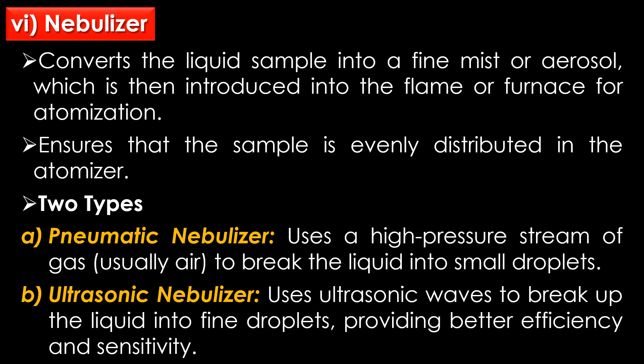The sixth part is the nebulizer, which converts the liquid sample into a fine mist or aerosol that is then introduced into the flame or furnace for atomization. The nebulizer ensures that the sample is evenly distributed in the atomizer. There are two types: the pneumatic nebulizer, which is most commonly used and uses a high-pressure stream of gas to break the liquid into small droplets, and the ultrasonic nebulizer, which uses ultrasonic waves to break up the liquid into fine droplets, providing better efficiency and sensitivity.